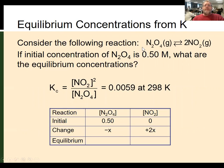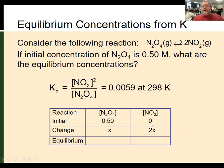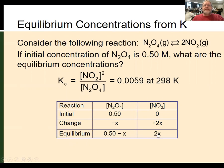Generally, if a coefficient is 1, we call the change X; if it's 2, we call it 2X; if it's 3, it would be 3X, and so on. Since NO2 starts at zero and must increase, the change is positive 2X, and N2O4 decreases by X. Combining initial and change gives equilibrium values of 0.50 − X for N2O4 and 2X for NO2. Substituting into the K expression gives 4X² / (0.50 − X) = 0.059. Simplifying, we get the quadratic equation 4X² + 0.0059X − 0.0030 = 0. Pause the video and solve this using the quadratic formula.